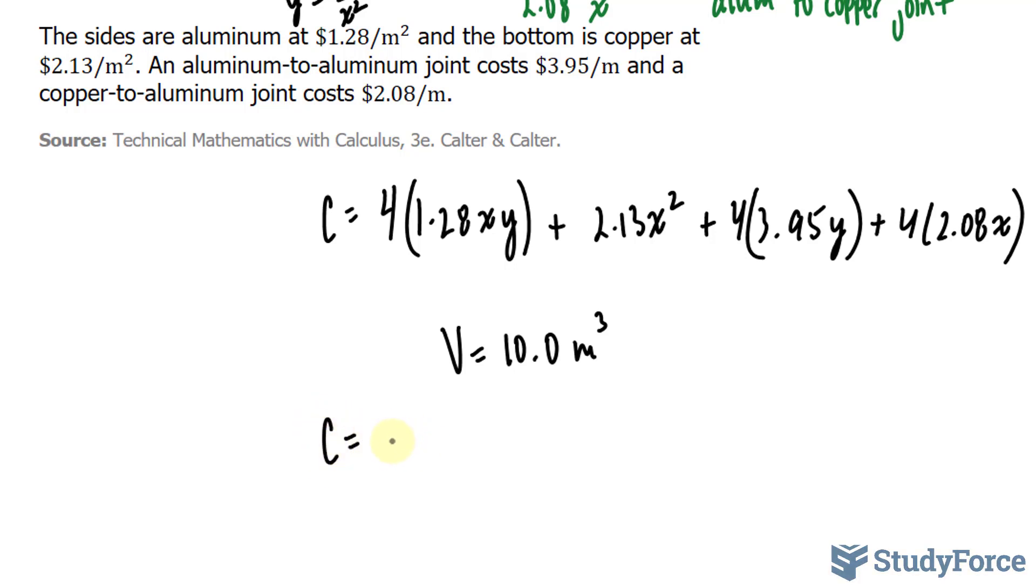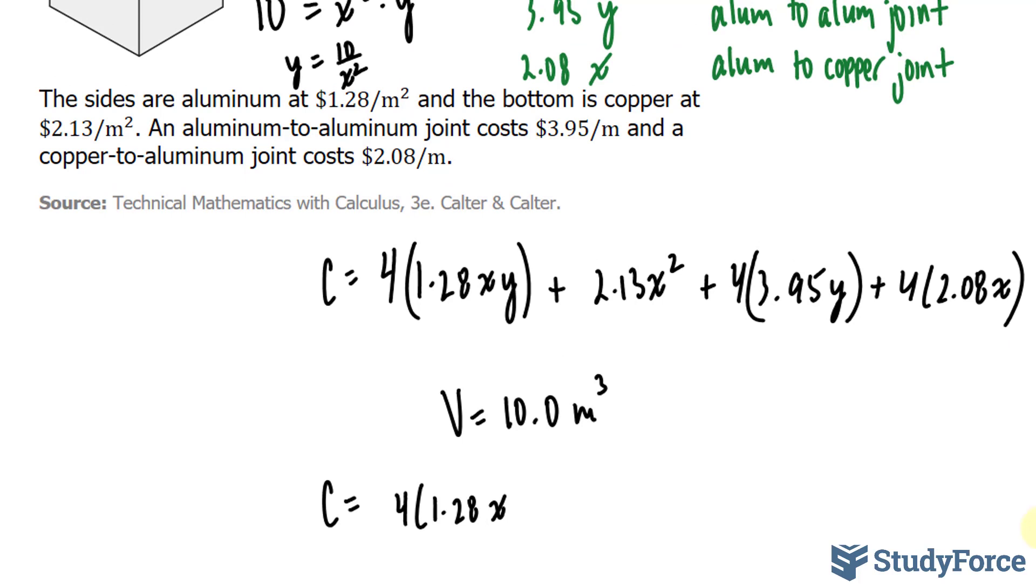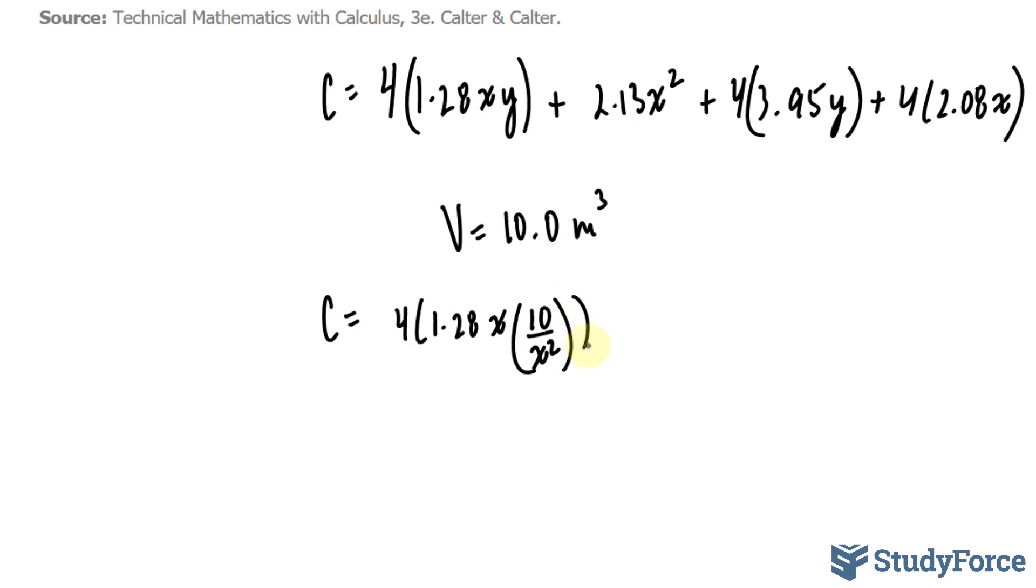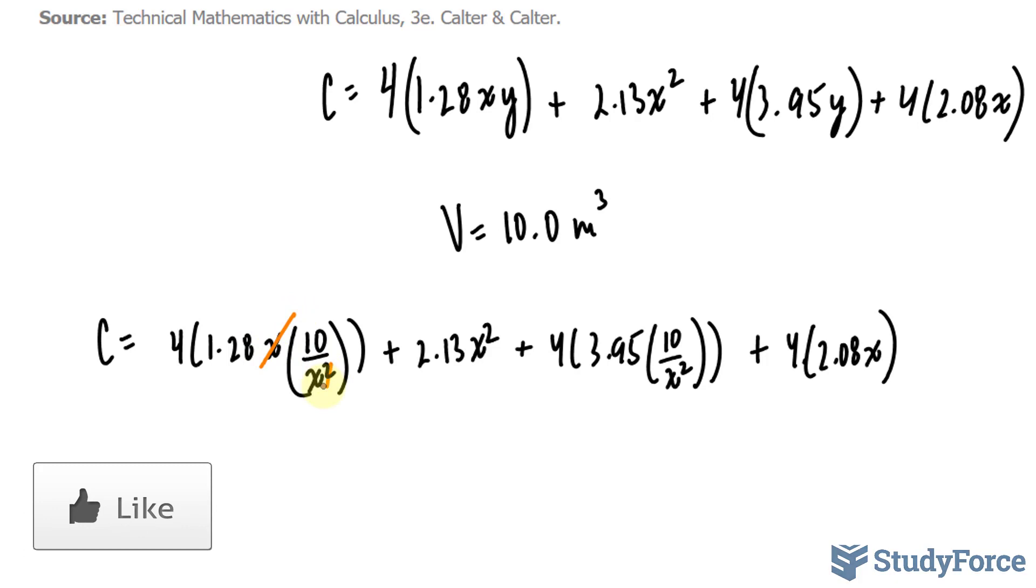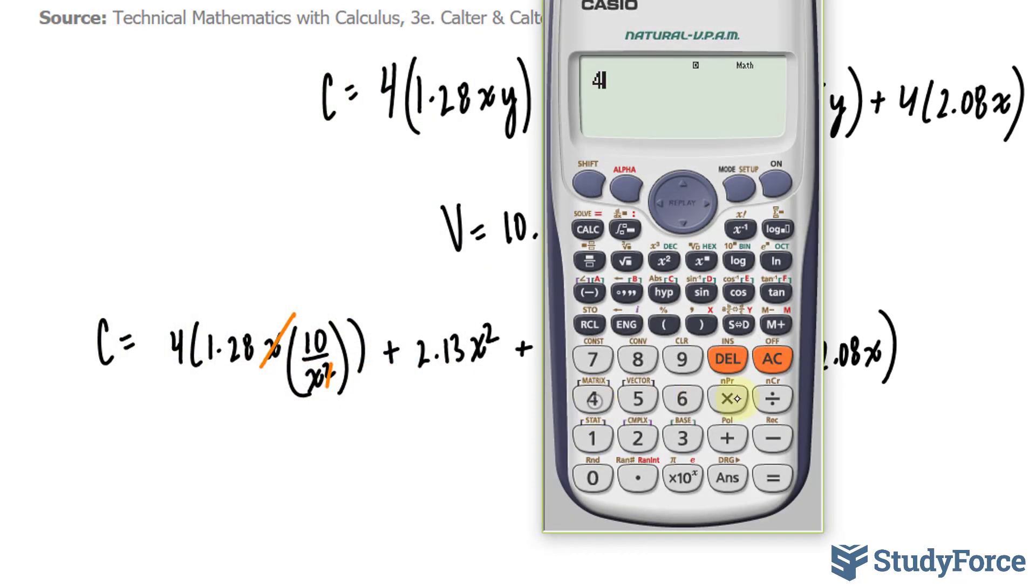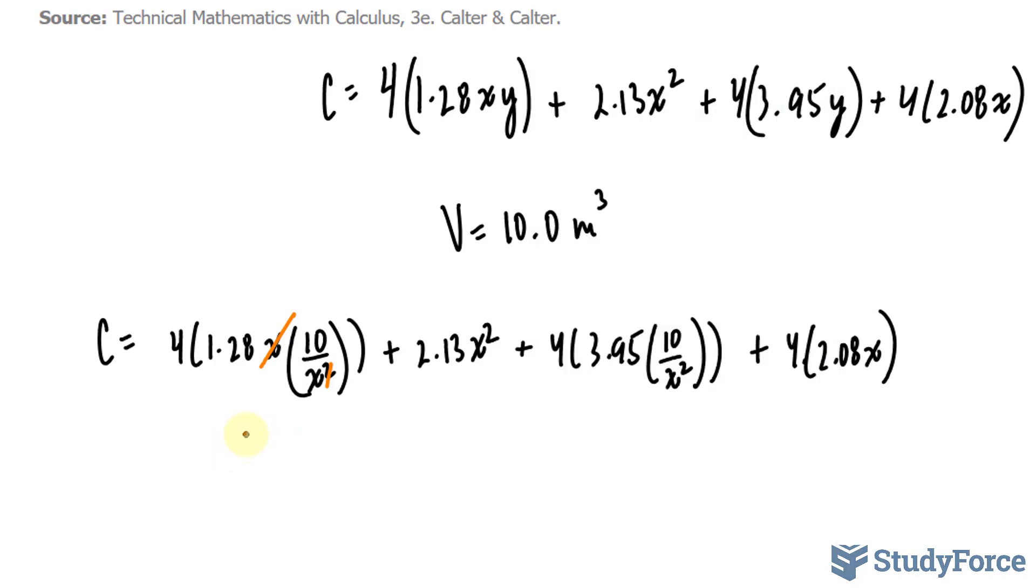Here's what I mean. Cost equals 4 times 1.28x. And remember y is now represented as 10 over x squared, plus 2.13x squared plus 4 times 3.95 times 10 over x squared plus 4 times 2.08. Now what I'll do is simplify this as much as I can, and then take the derivative. I can start the simplification off by canceling this x with one of these. I can also multiply this 4 and this 10 together in addition to this 1.28. That gives us 51.2 over x. And if you simplify the rest, you should end up with the following expression.